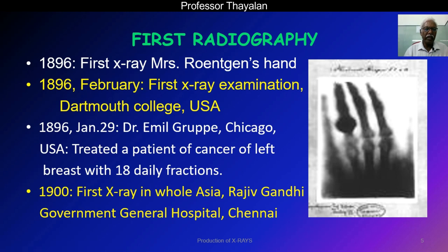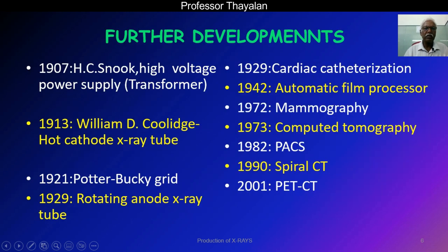In 1900, the first X-ray came to the present Rajiv Gandhi Government General Hospital, Chennai, which was known as Madras at that time. It was the first X-ray for all of Asia used for civilian purposes. Apart from the X-ray discovery, there are also important additional milestones which we use today.